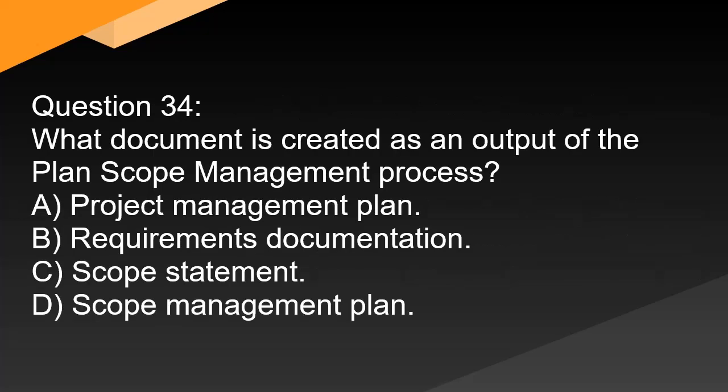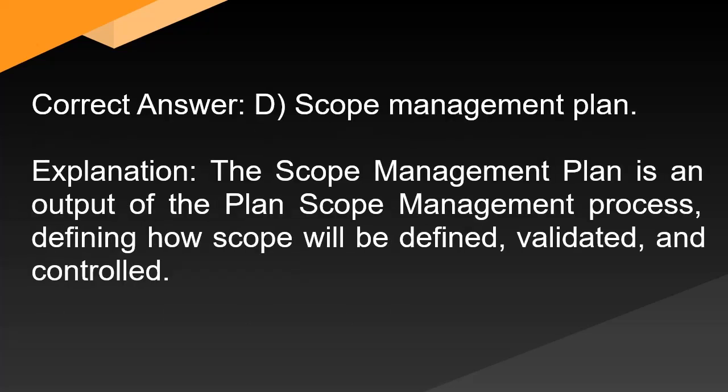Question 34: What document is created as an output of the plan scope management process? A. Project management plan. B. Requirements documentation. C. Scope statement. D. Scope management plan. Correct answer: D. Scope management plan. Explanation: The scope management plan is an output of the plan scope management process, defining how scope will be defined, validated, and controlled.